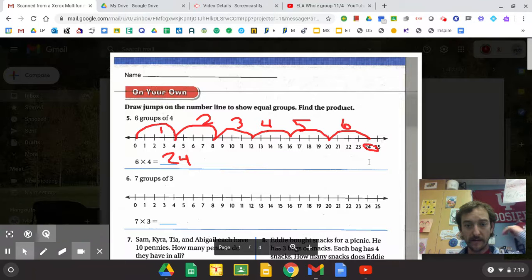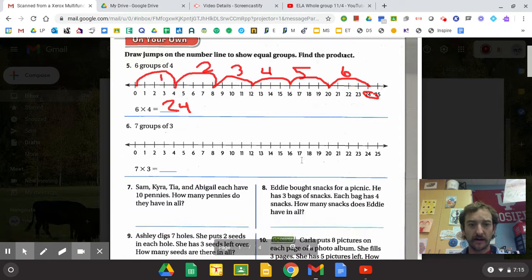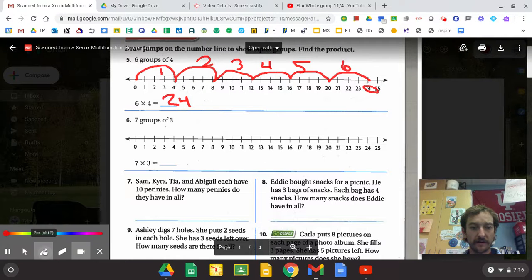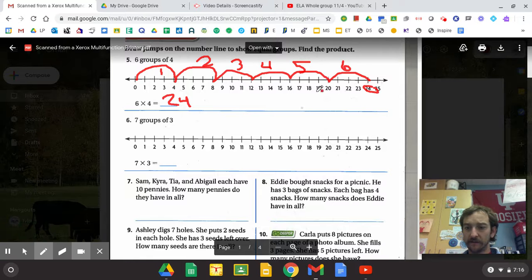Okay, I've got my mouse. Try the next one here. Seven groups of three. So seven groups of three is the same thing as seven times three. So what I'm going to do on my number line is take jumps of three.